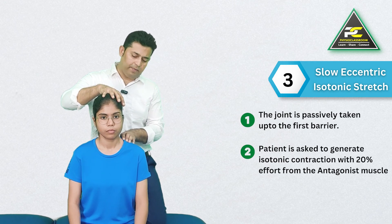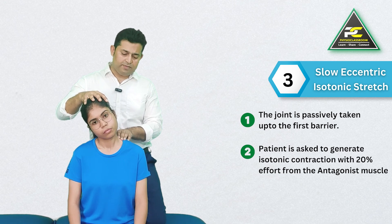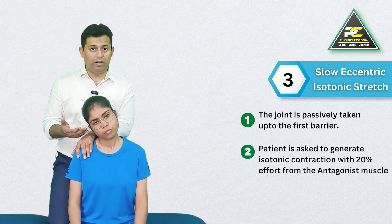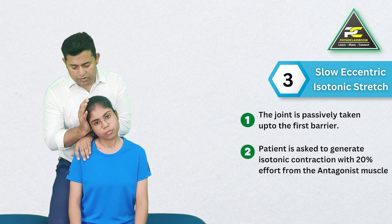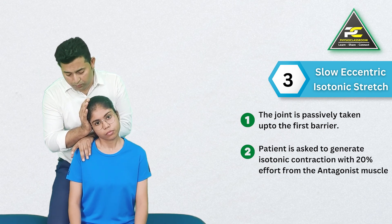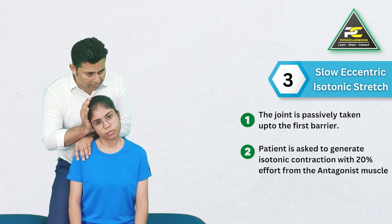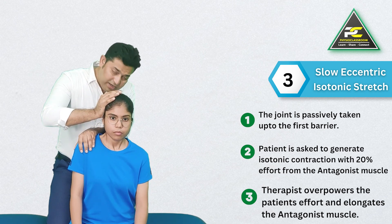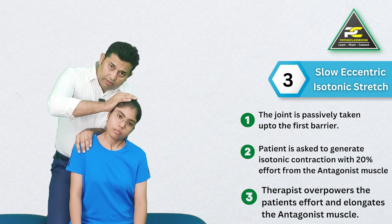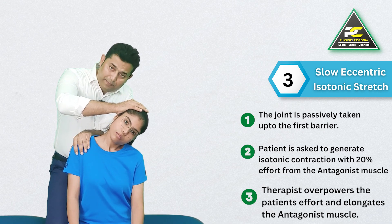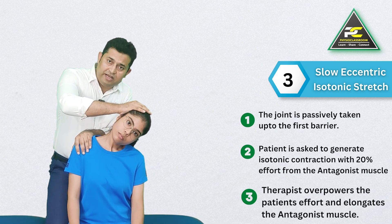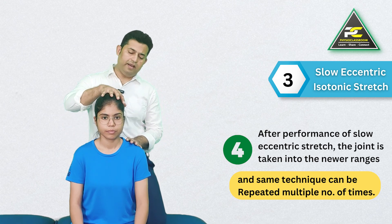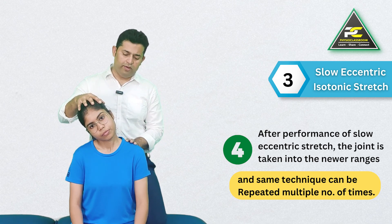From here, the patient is asked to produce isotonic contraction from the right upper trapezius — with 20% effort to bring the right shoulder and ear closer while letting the therapist win. As the patient intends to shorten the muscle, the therapist overpowers and produces a passive elongation of that same muscle. The head and neck are then repositioned into the new available range at the first perceived barrier, and the technique can be repeated multiple times.